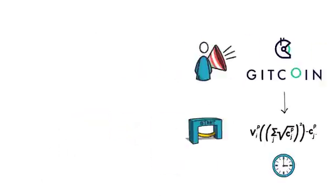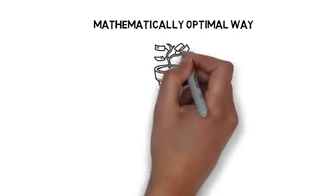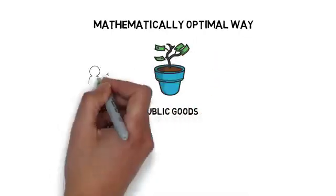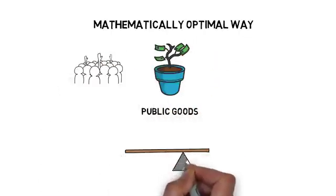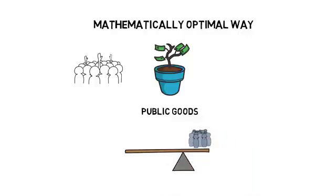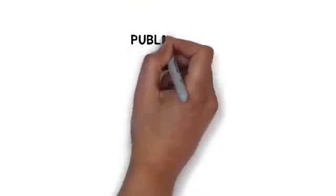Quadratic funding is the mathematically optimal way to fund public goods in a democratic community where the number of contributors matters more than the actual amount funded. Let's start with what public goods actually are.